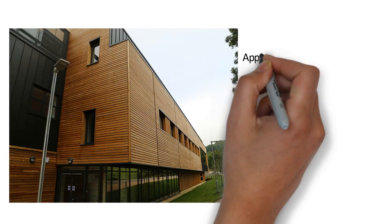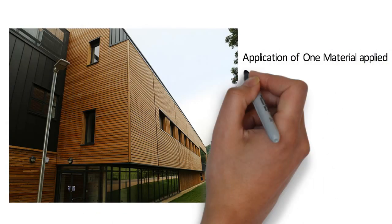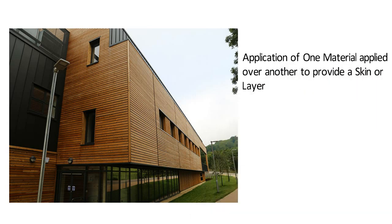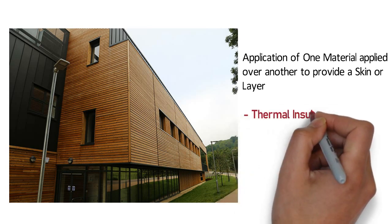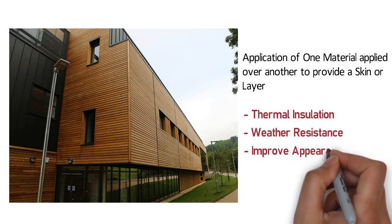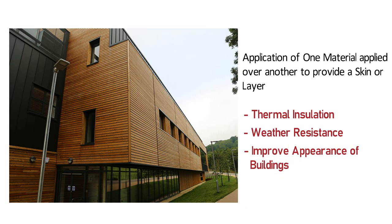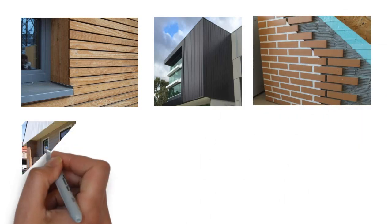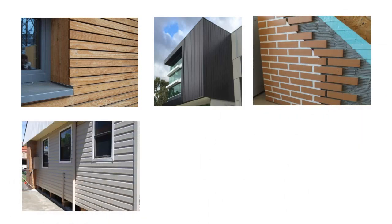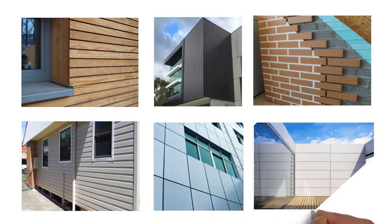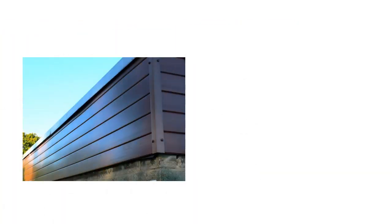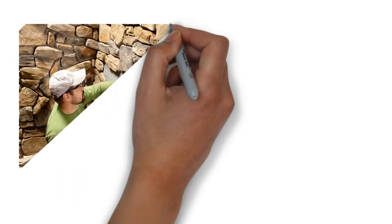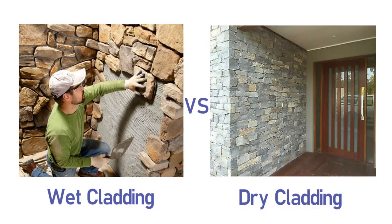Hello friends. Cladding is the application of one material applied over another to provide a skin or layer. In construction, cladding is used to provide a degree of thermal insulation and weather resistance and to improve the appearance of buildings. Cladding can be made of wood, metal, brick, vinyl and composite materials that can include aluminum, blends of cement and recycled polystyrene or rice straw fibers. In this video, we will see the differences between wet cladding and dry cladding.